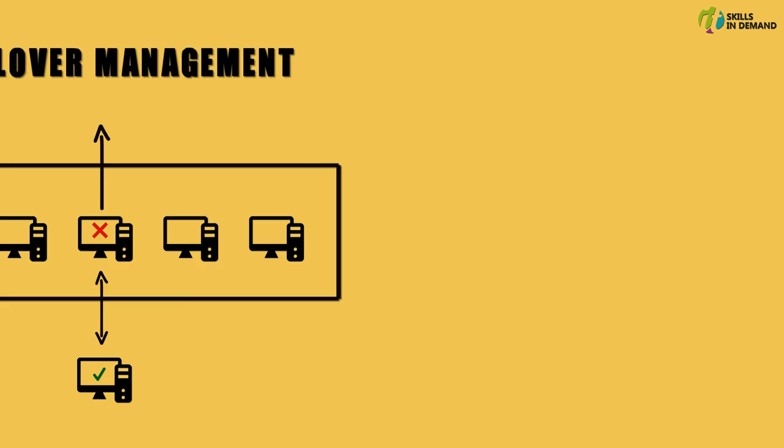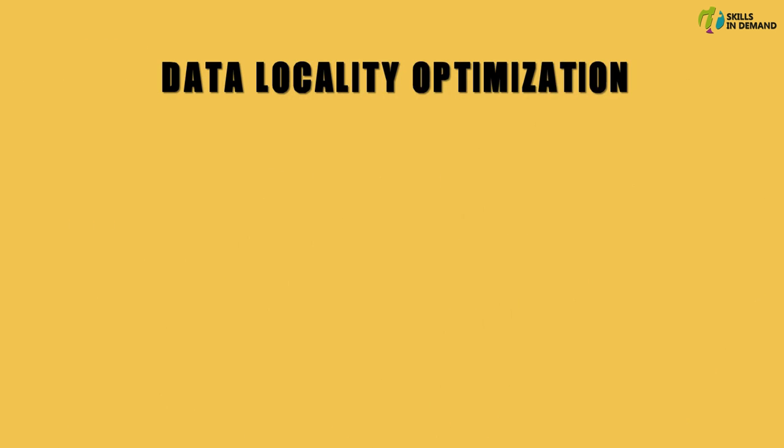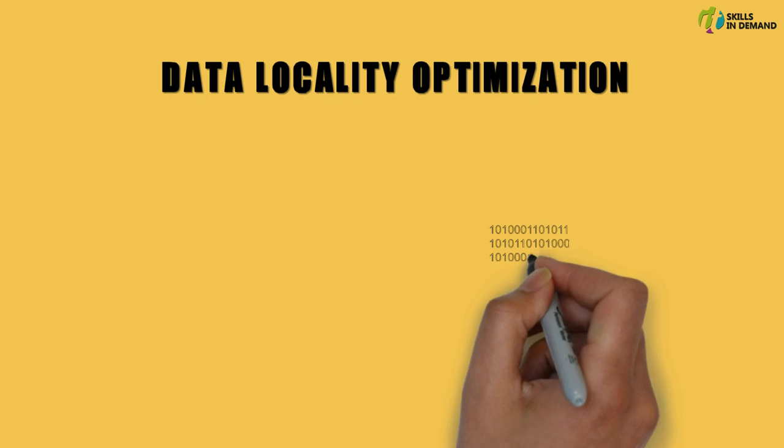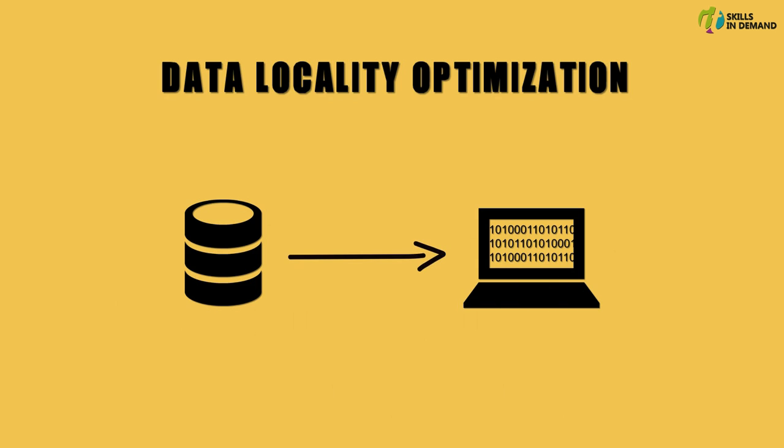The next important feature on the list is data locality optimization. It is one of the most important features offered by the Hadoop framework. In a traditional approach, whenever a software program is executed, the data is transferred from the data center onto the machine where the program is getting executed.